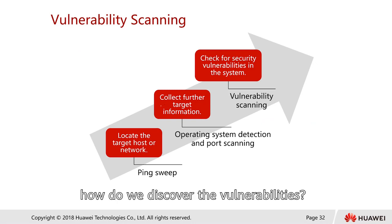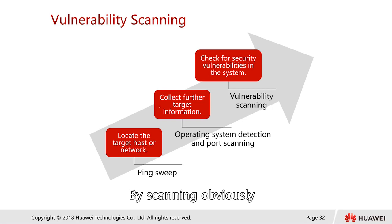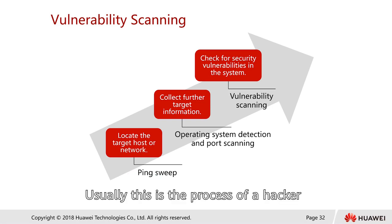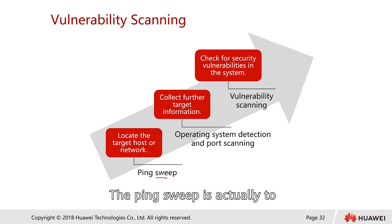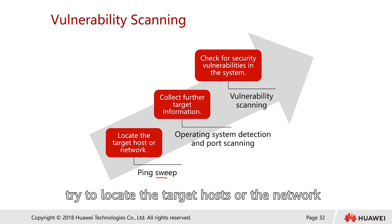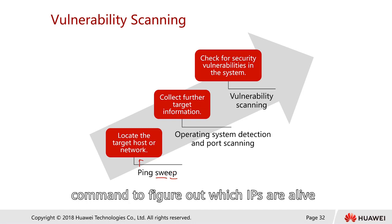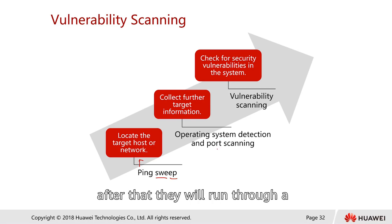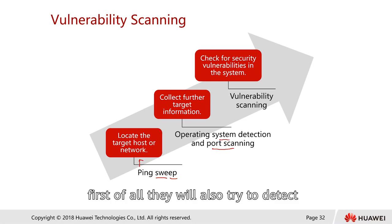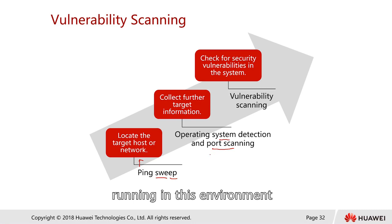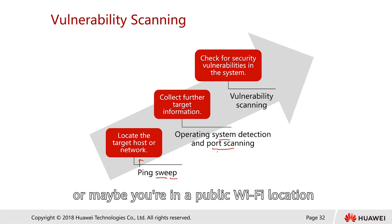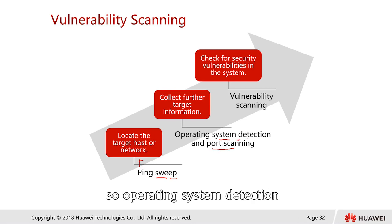How do we discover vulnerabilities? Typically by scanning. The process a hacker follows: first, they perform a ping sweep to locate the target host or network. If a hacker joins your network by wired cable or wireless, they run a ping sweep to figure out which IP addresses are alive. After that, they run a port scanning program.